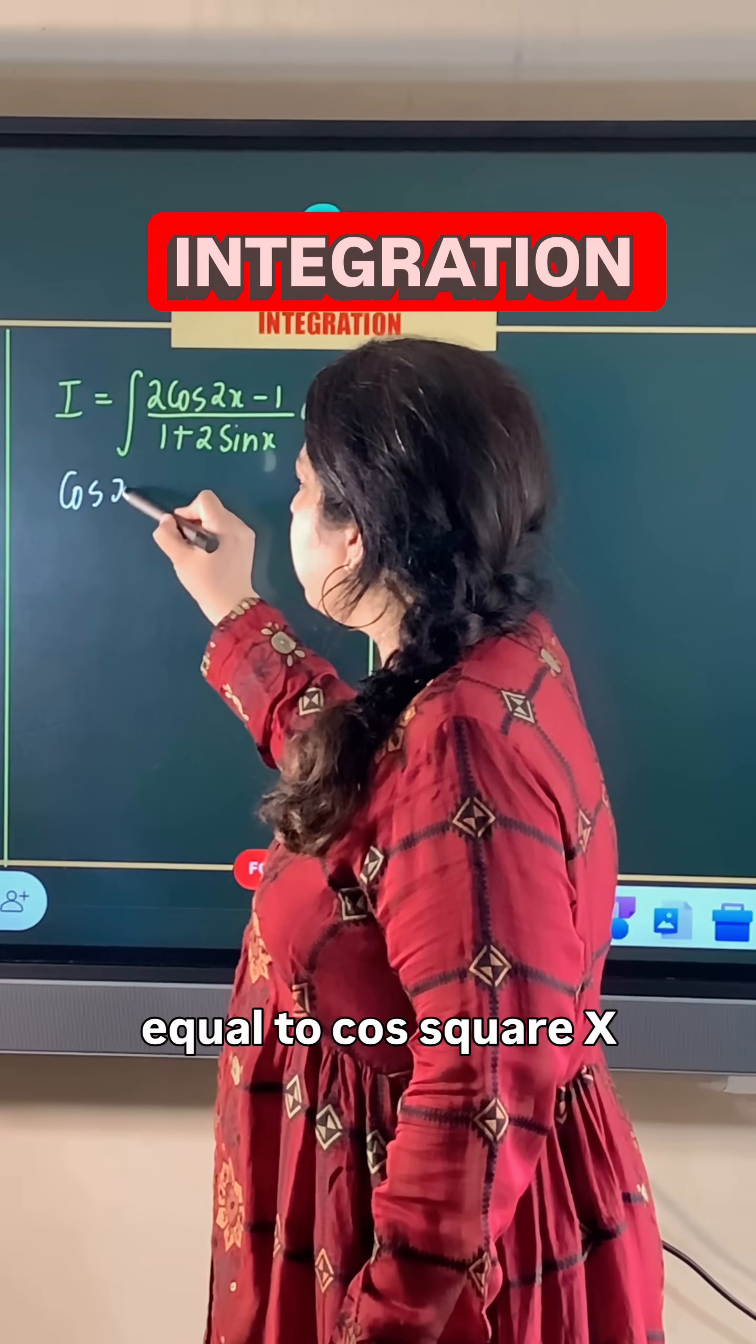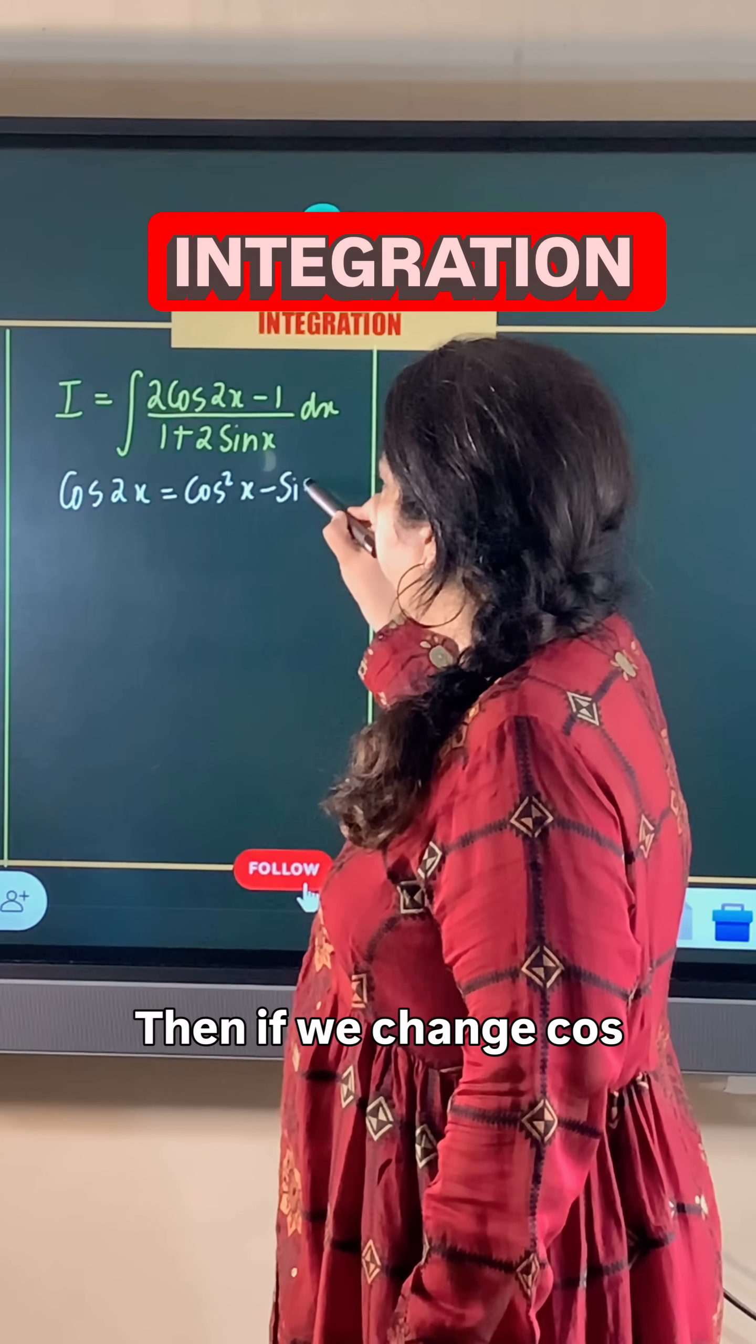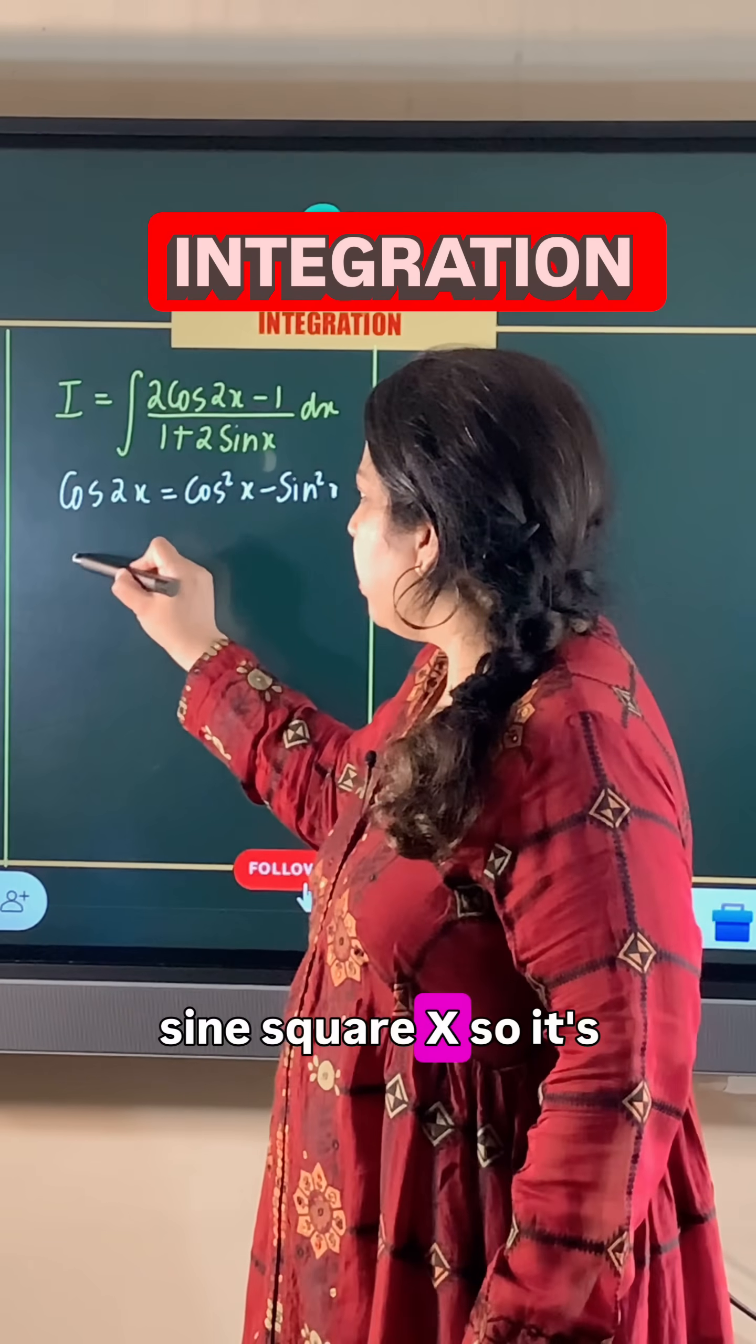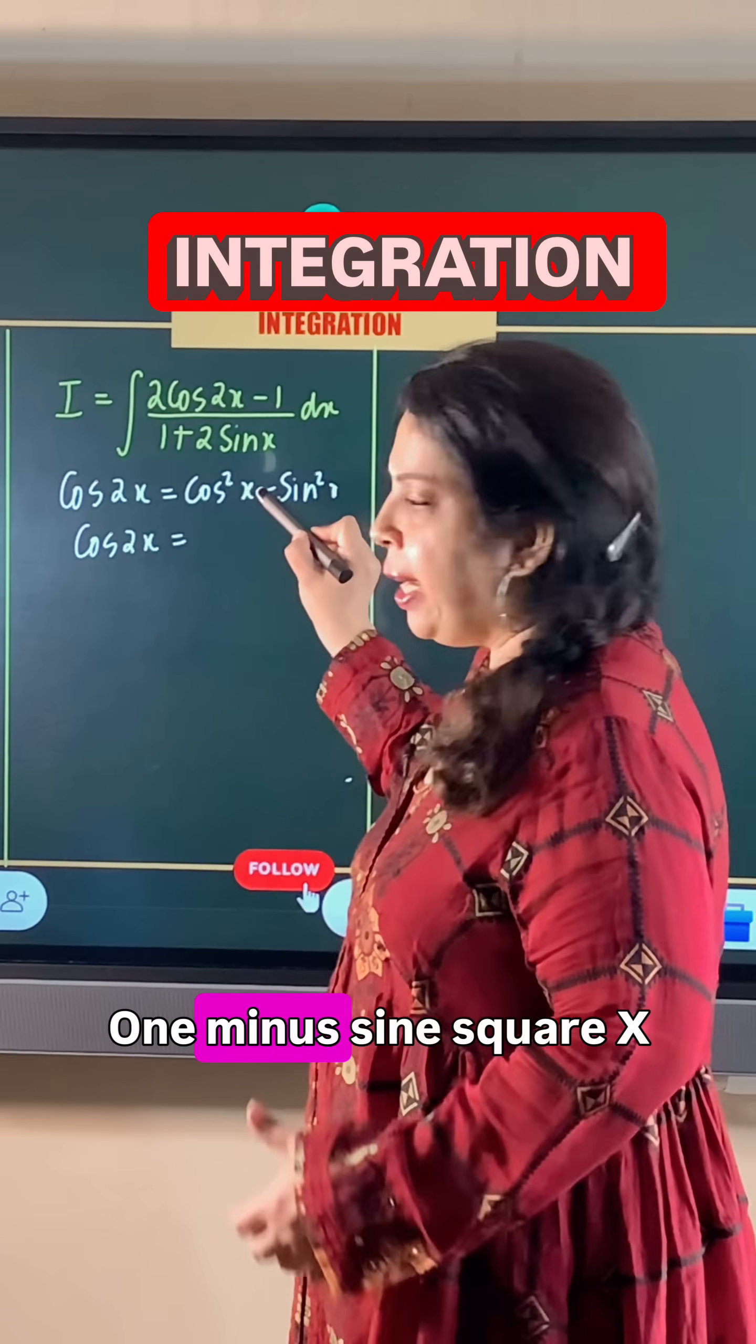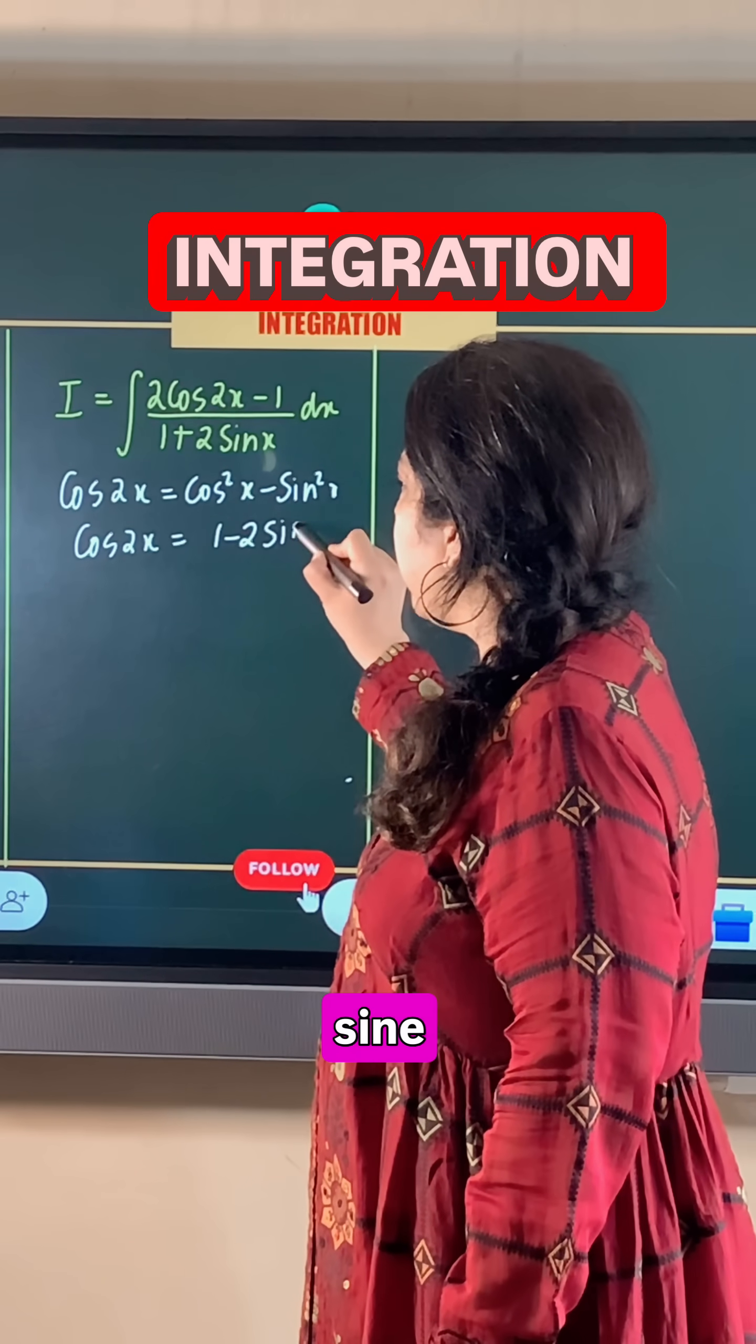One is cos2x = cos²x - sin²x. If we change cos²x to 1 - sin²x, the identity becomes 1 - sin²x - sin²x, which is 1 - 2sin²x.